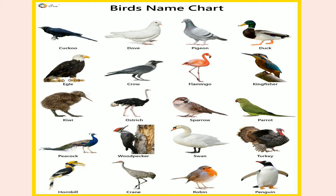Birds also have a beak. All birds have different types of beaks and the shape of the beak depends on the type of food they eat. Birds don't chew their food and they don't have any teeth. They use their beak to bite or crush food, and there are so many different types of beaks.